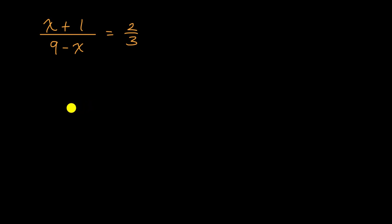All right, now let's work through this together. The first thing that we might want to do, there's several ways that you could approach this, but the thing I like to do is get rid of this x here in the denominator. And the easiest way I can think of doing that is by multiplying both sides of this equation by nine minus x.